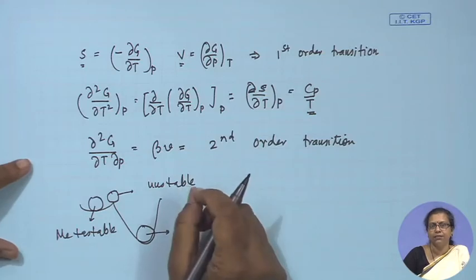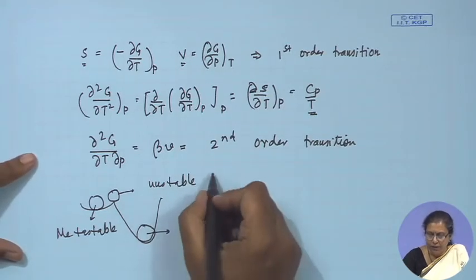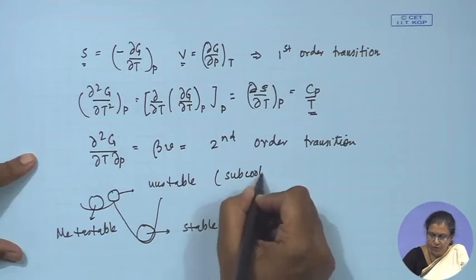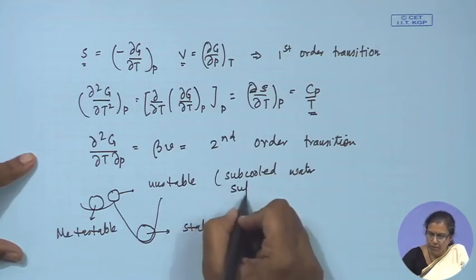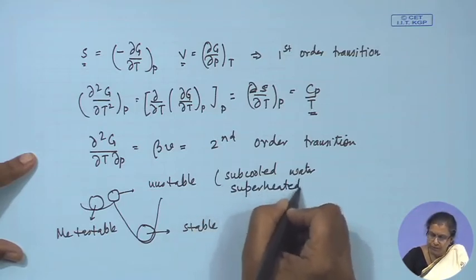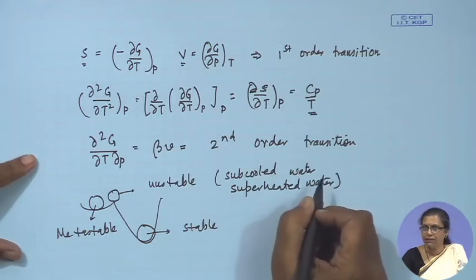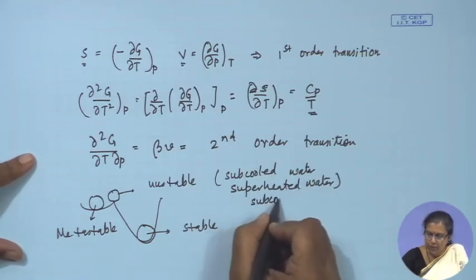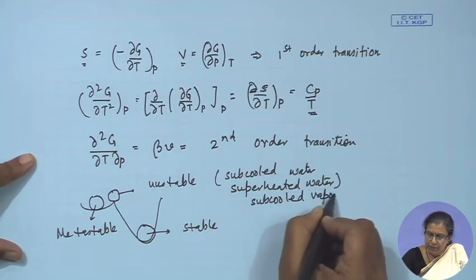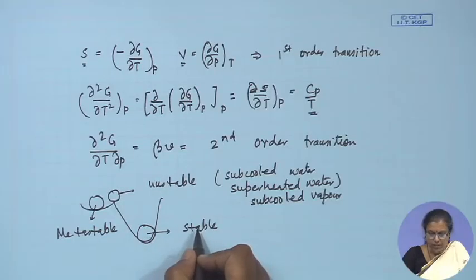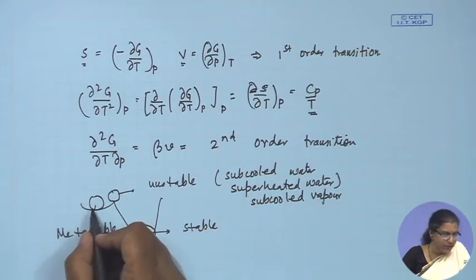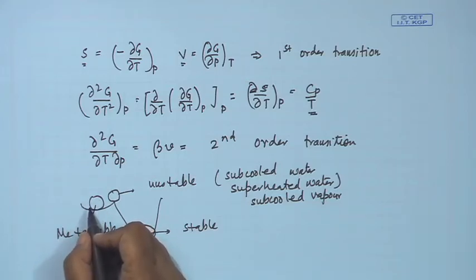Examples of metastable states include water existing below 0°C (sub-cooled water), water existing above 100°C (super-heated water), or steam existing below 100°C (sub-cooled vapour). These states are extremely unstable and are known as metastable states. In classical thermodynamics we mostly deal with stable equilibrium states, and metastable states arise during phase transitions.